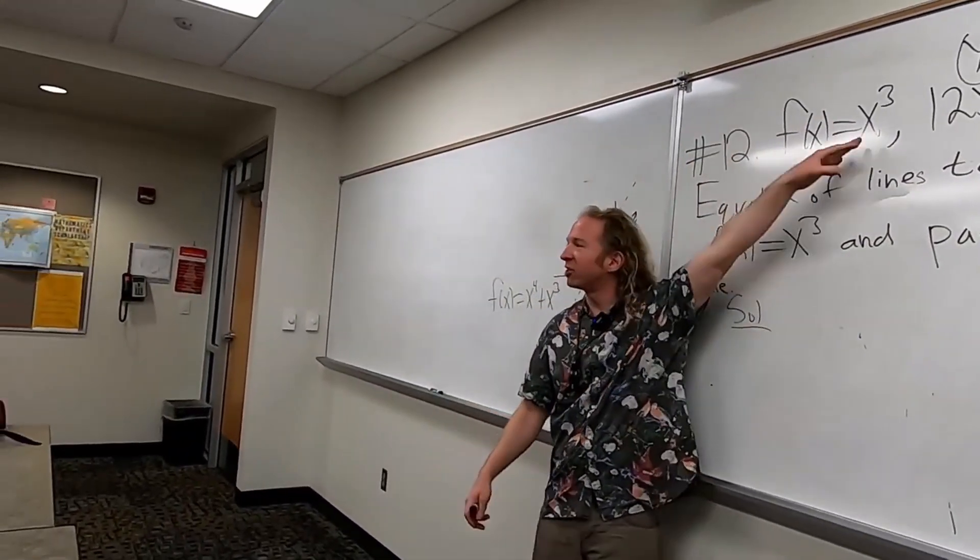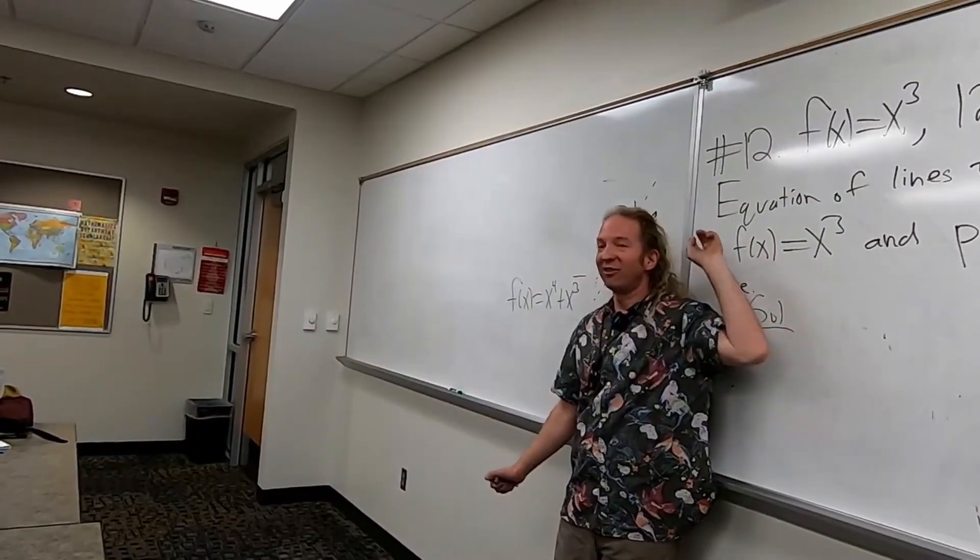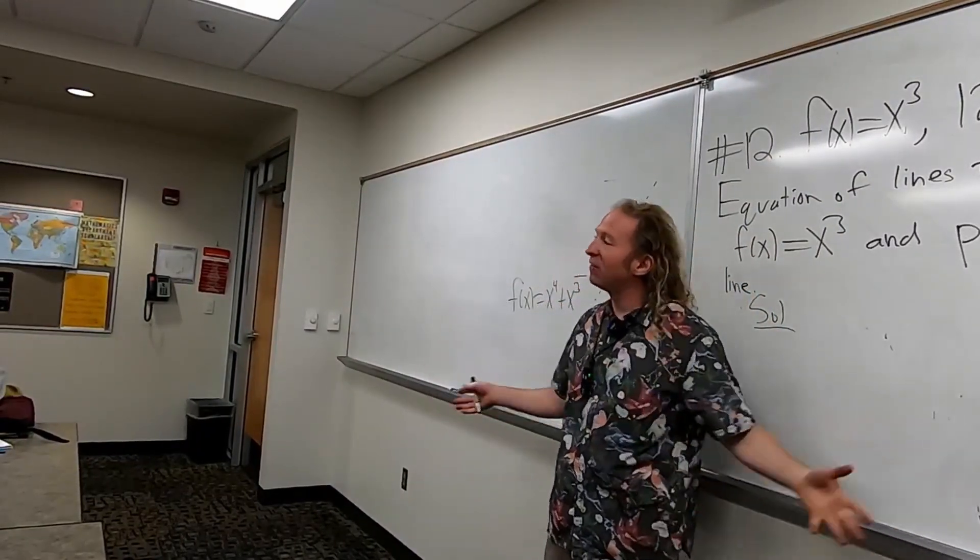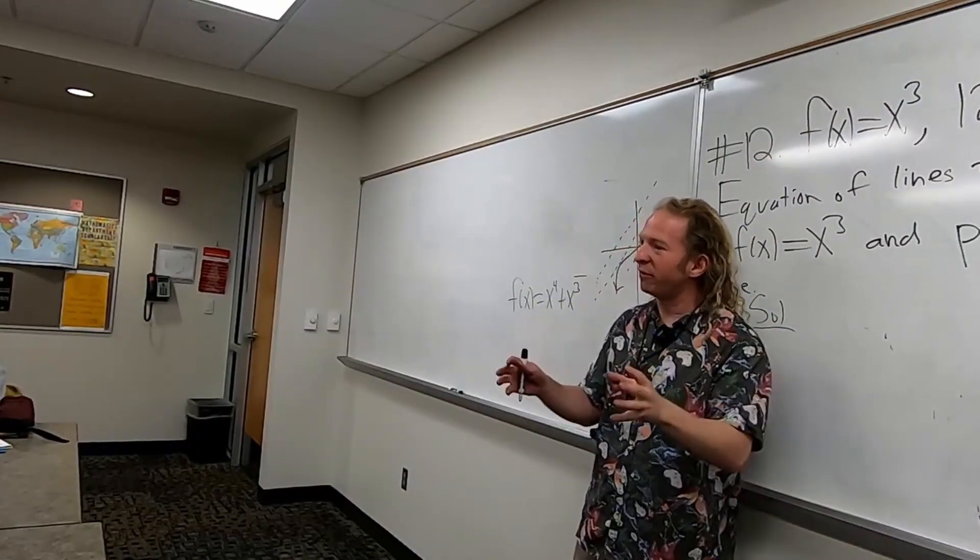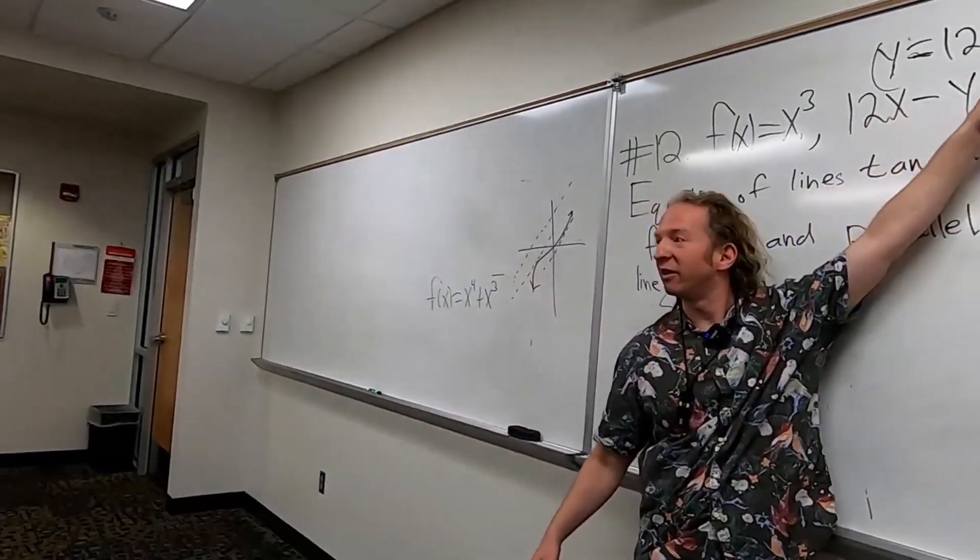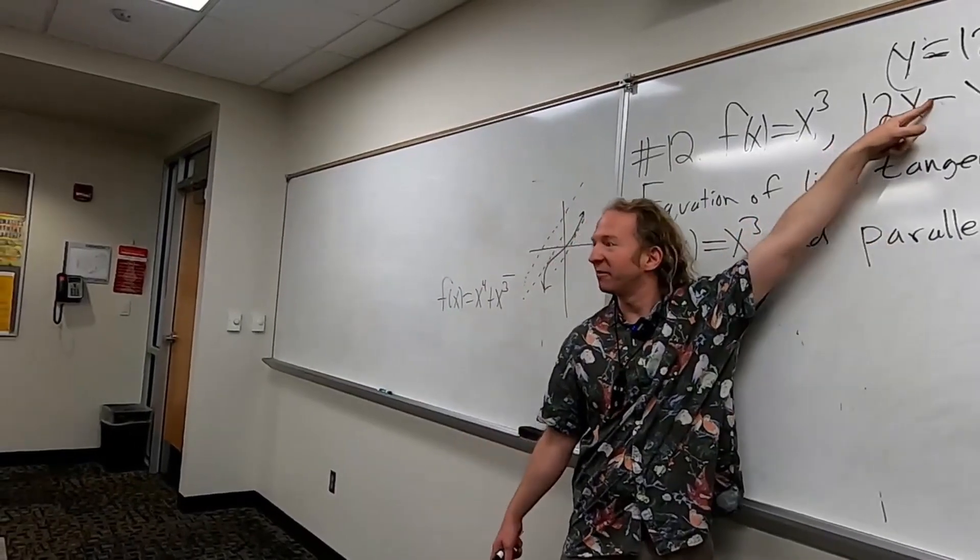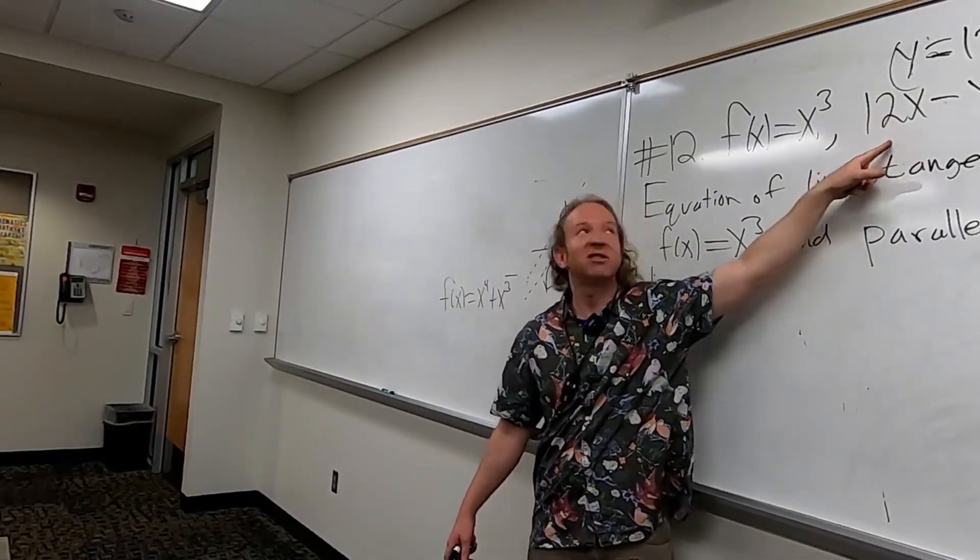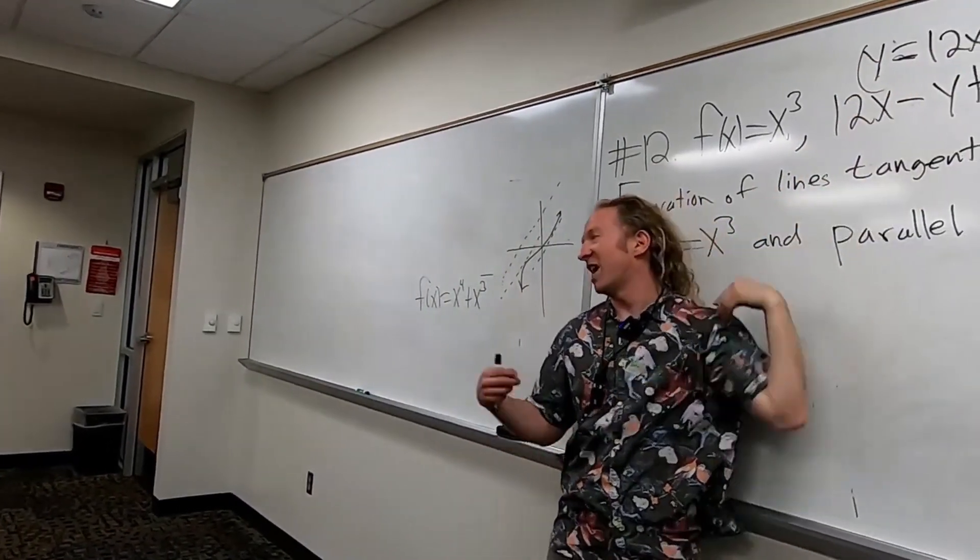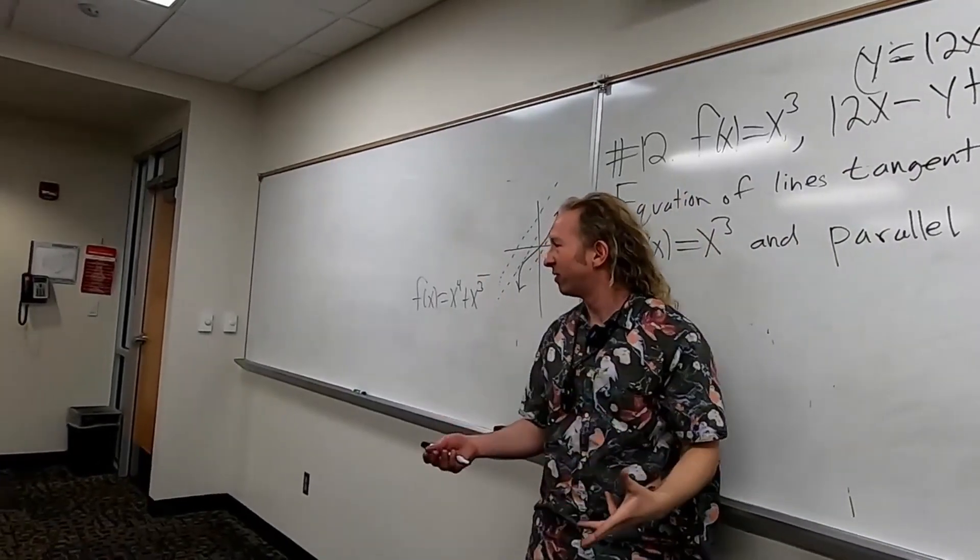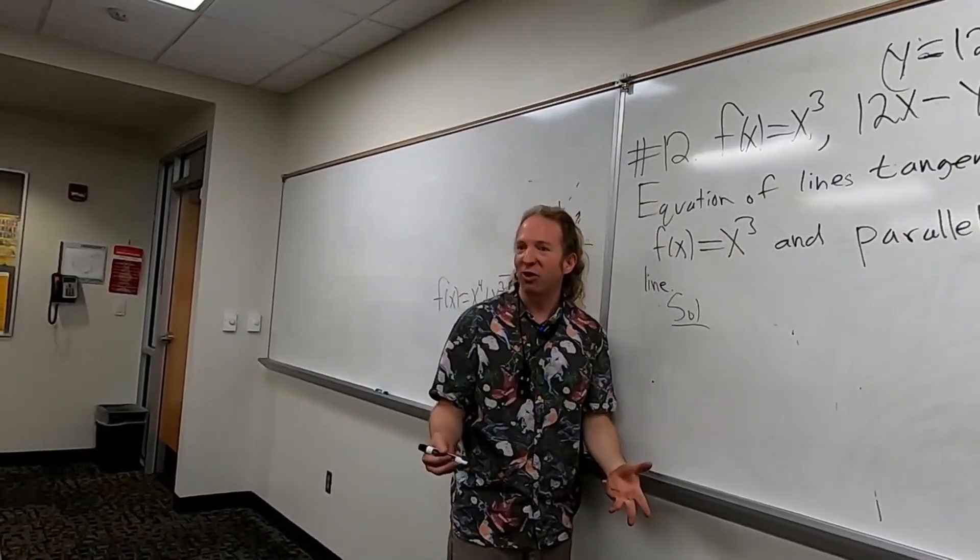What is the slope of the function? What is that called? The derivative. So the derivative is the slope of the function. But the derivative should be equal to the slope of the line because they're parallel, right? The tangent line has to be parallel to this line. So the tangent line has to have the same slope as this line. So the tangent line has to have a slope of 12. Therefore, the derivative must be 12.